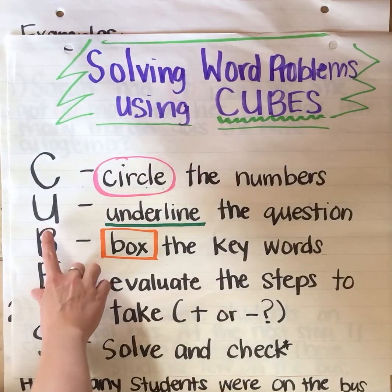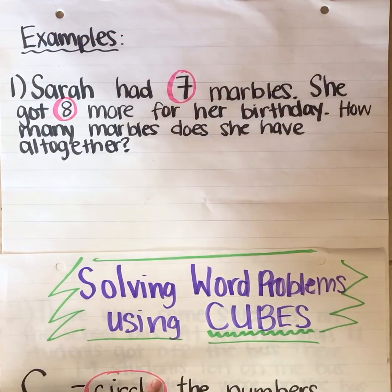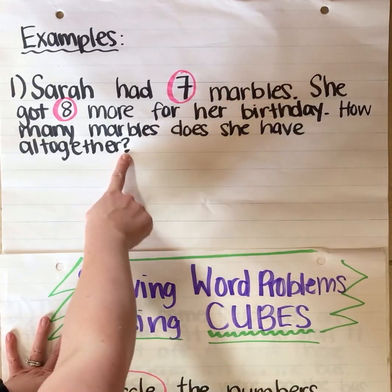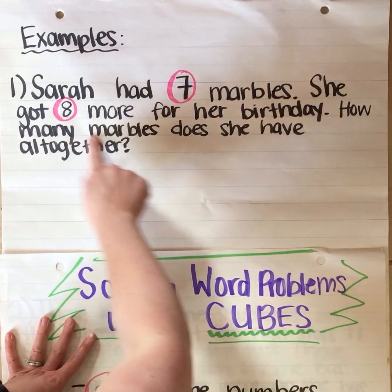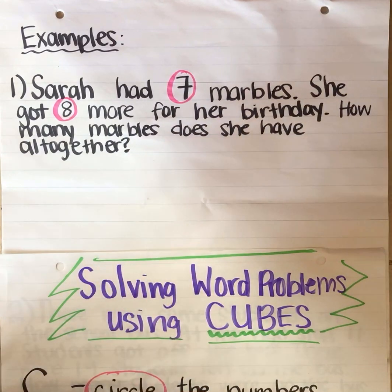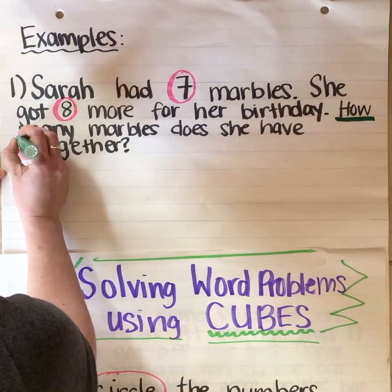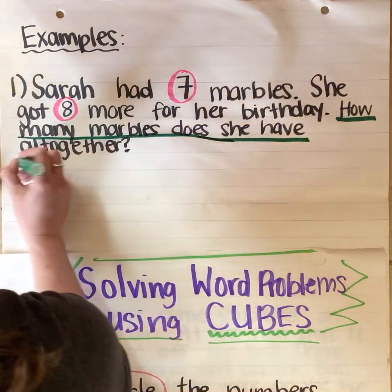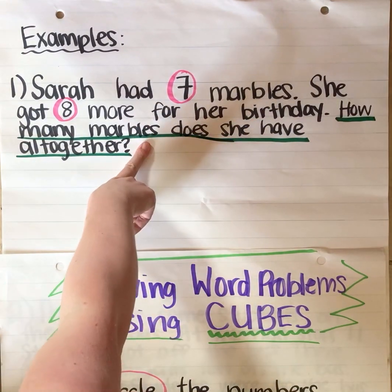Okay, the next step is to underline the question. Let's see if we can figure out what the question is asking me. Usually the best indicator is the question mark. I see that the question mark is at the end of the last sentence and it says: how many marbles does she have all together? That is my question. So I'm going to go ahead and underline the question so I know exactly what my answer needs to be.